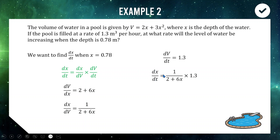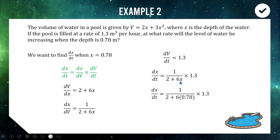So dx/dt = (1/(2 + 6x)) × 1.3. We're trying to find this when the depth x = 0.78. Substituting x = 0.78 and putting it through a calculator gives approximately 0.19. So the depth of the pool is changing at about 0.19 metres per hour — 19 centimetres per hour.